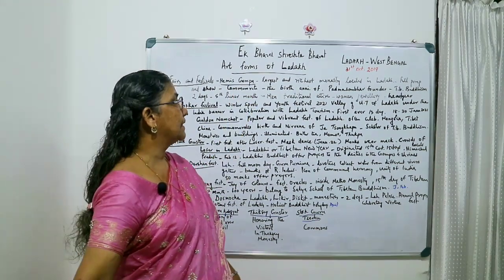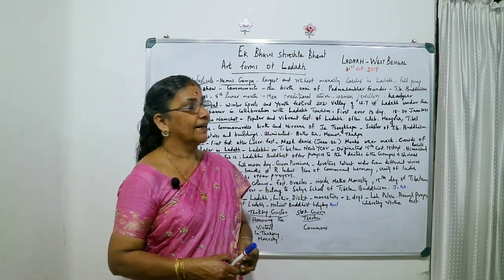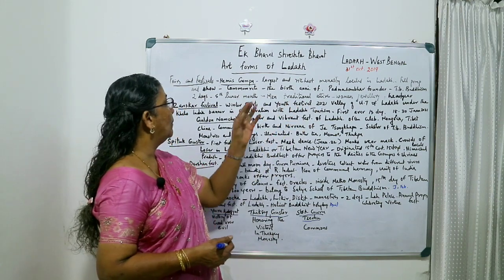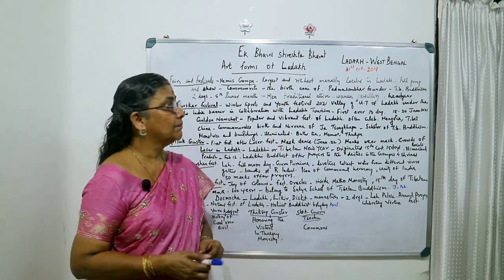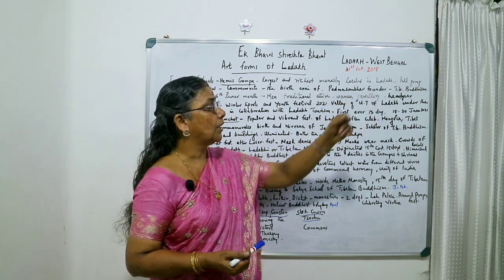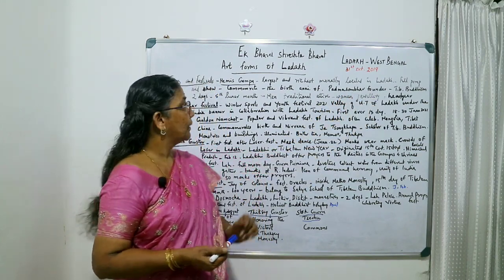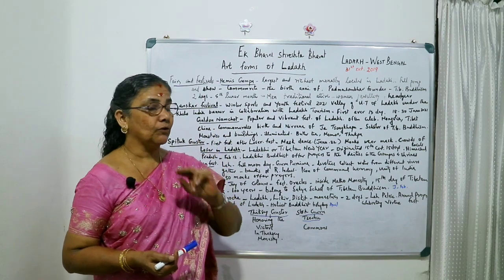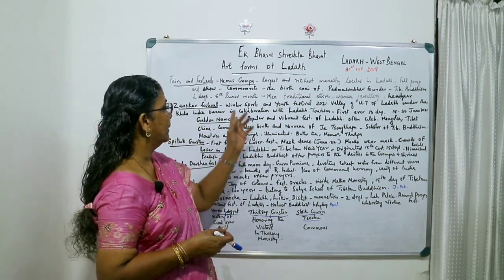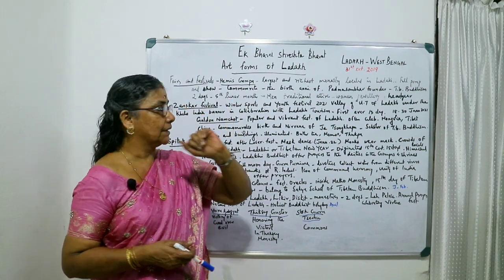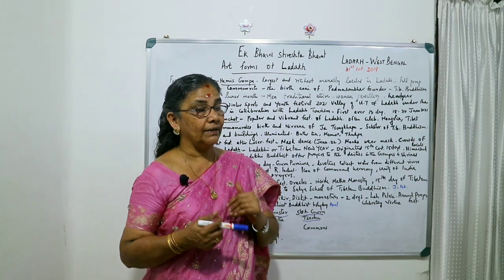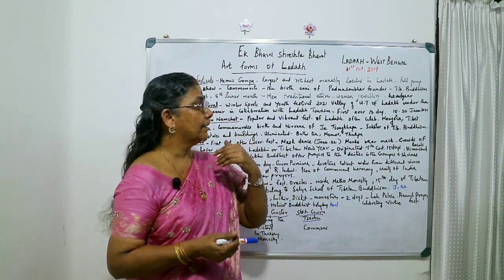The Hemis Gompa festival is held with full pomp to commemorate the birth anniversary of Padmasambhava, the founder of Tibetan Buddhism. It is celebrated for two days on the fifth month of the lunar calendar. Men wear traditional attire and women also have heavy jewelry and headgear during this festival.